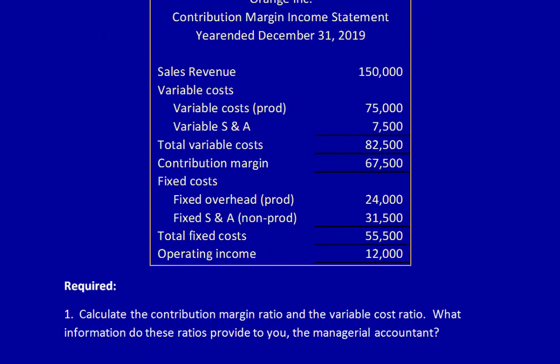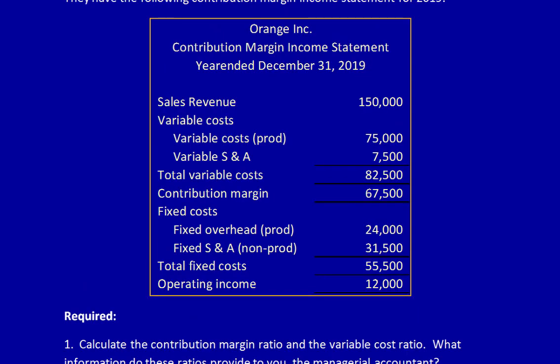Let's look at the required. Calculate the Contribution Margin Ratio and the Variable Cost Ratio. What information do these ratios provide to you, the managerial accountant? Let's start by calculating them. We're going to do it directly on the Contribution Margin Income Statement.